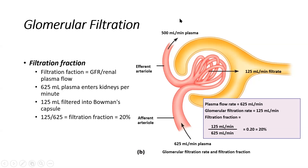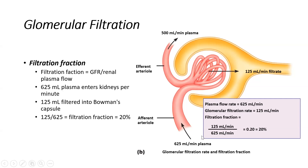A filtration fraction is a measure of how much of the GFR represents as a fraction of our total renal plasma flow. We know 625 milliliters of plasma comes into the glomerulus and 125 milliliters is filtered. So how much of our total renal plasma flow is filtered across the filtration membrane? If we take 125 divided by 625, we get a percentage of about 20 — so 20% of our total renal plasma flow is filtered across the filtration membrane per minute.